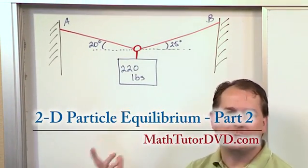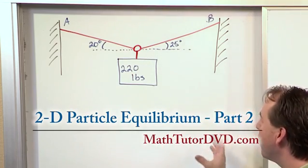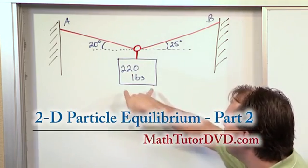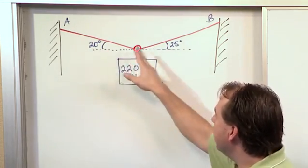Notice it doesn't look like there's any particles in this problem. You don't see any little tiny particles floating around. What we mean by particle equilibrium is that this box here is 220 pounds and there's two cables attaching it at various angles,